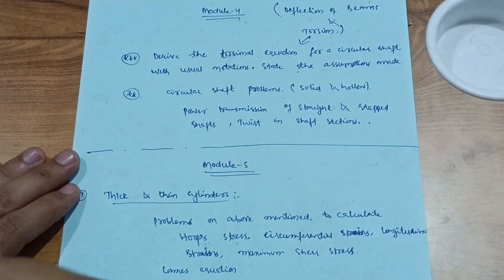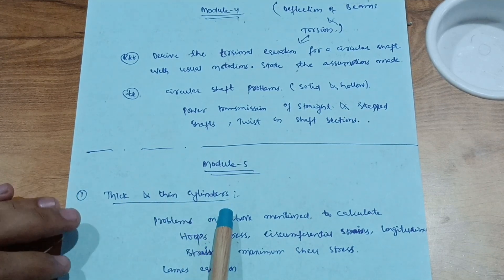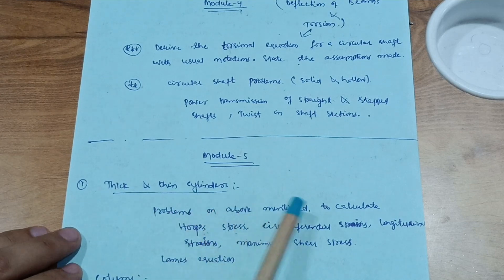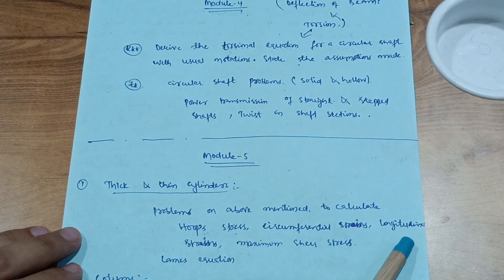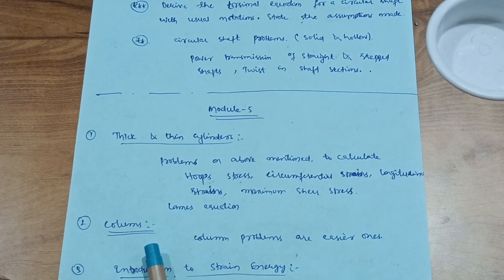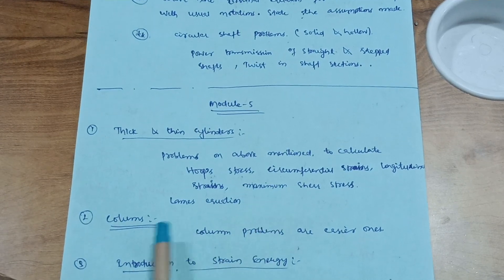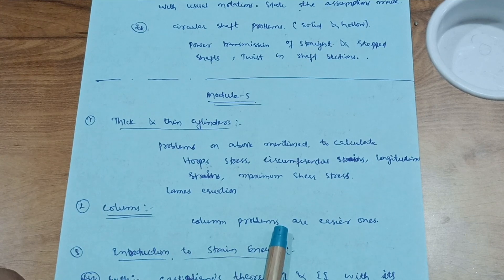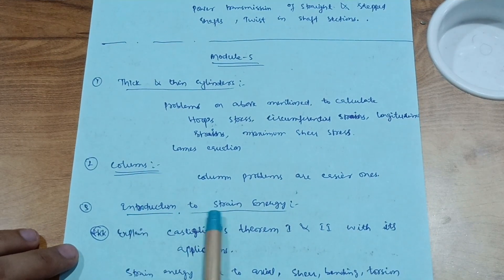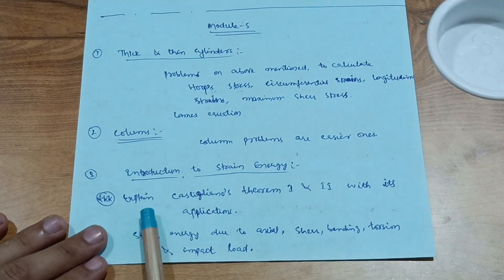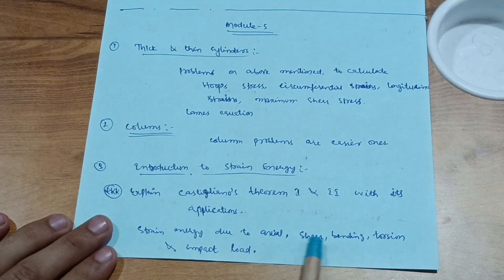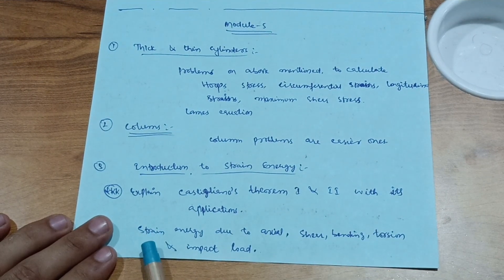Module 5 covers Thick and Thin Cylinders, Columns, and an introduction to Strain Energy — three chapters. Focus on problems to calculate hoop stress, circumferential strain, longitudinal strain, and maximum shear stress using Lame's equation for thick cylinders. Column problems are easier and convenient — go through those. For strain energy, focus on Castigliano's theorem (first and second) with applications, and strain energy due to axial load, shear, bending, torsion, and impact load.